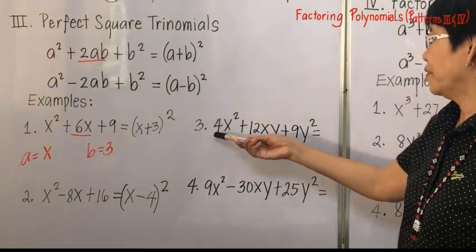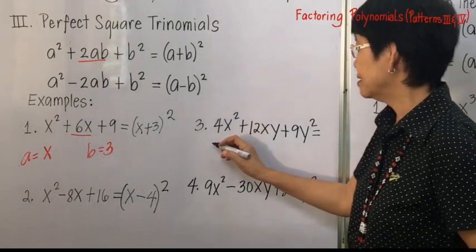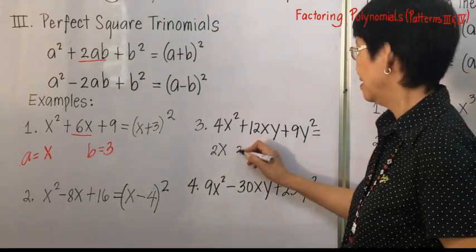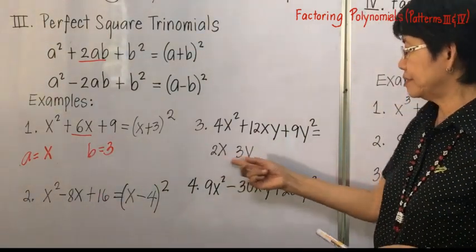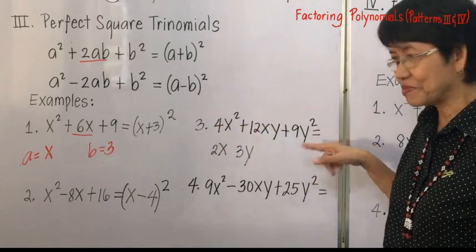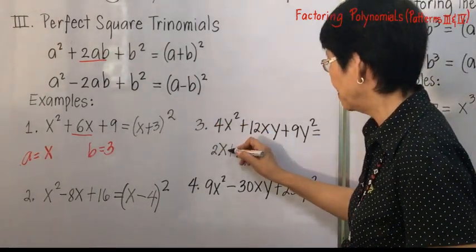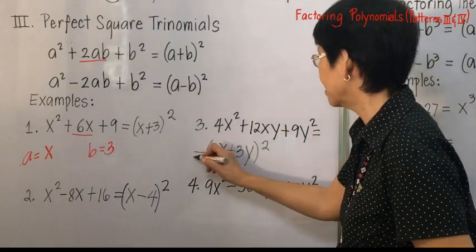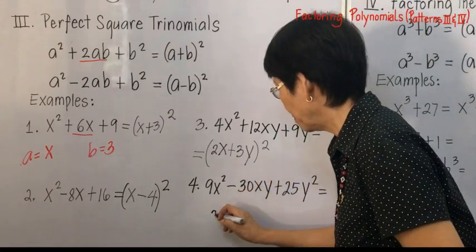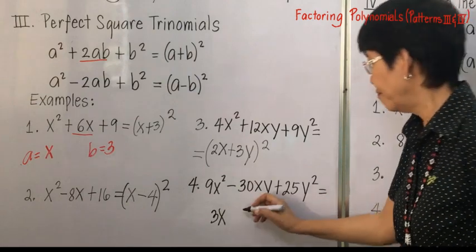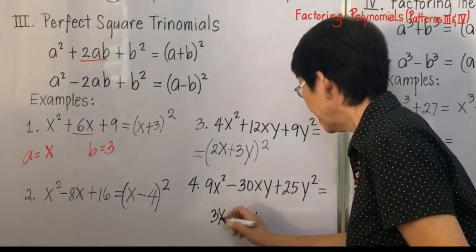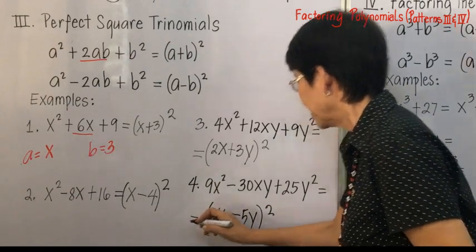Number three: 4x squared — the square root of that is 2x — and 9y squared — the square root is 3y. Multiply those two to get 6xy, then double it to get 12xy, confirming it's a perfect square trinomial. The factors are 2x plus 3y, quantity squared. For number four, 9x squared gives square root 3x, and with a negative middle term and 25y squared giving 5y, the answer is 3x minus 5y, quantity squared.